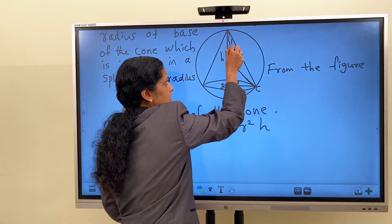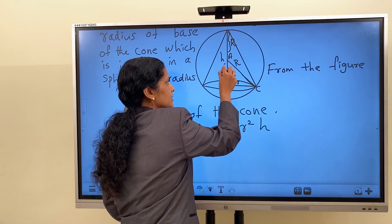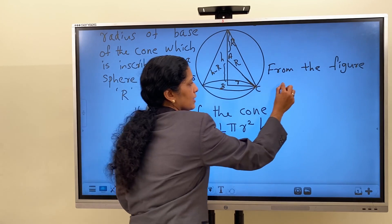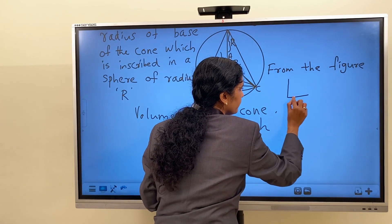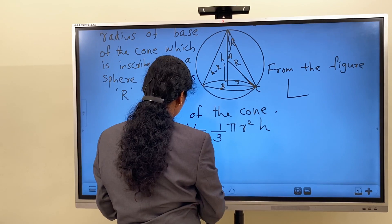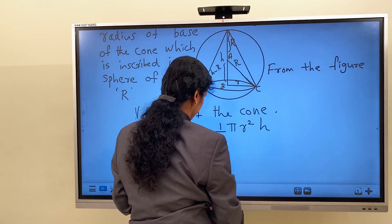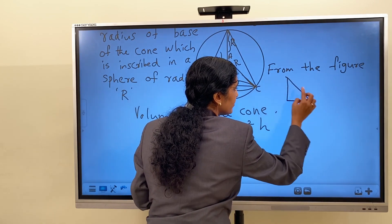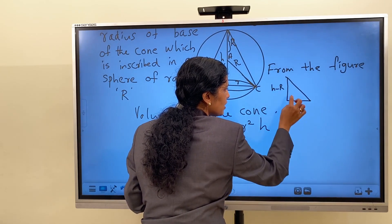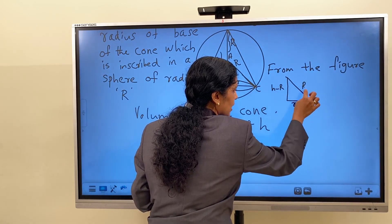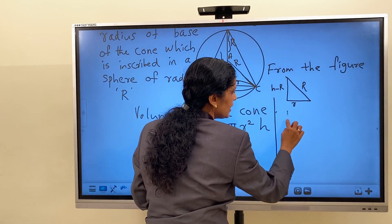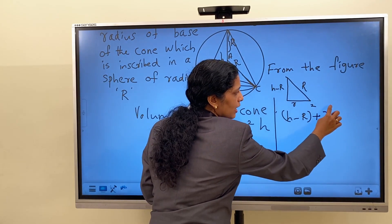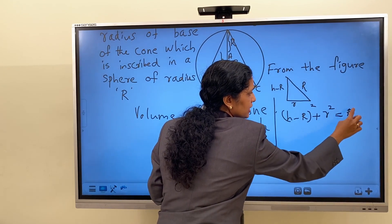Capital R is the radius of the sphere. Therefore, this much height is h minus R. Then from the right angle triangle, we have h minus R, small r, and capital R. And from the figure, it is clear that (h − R)² + r² = R².